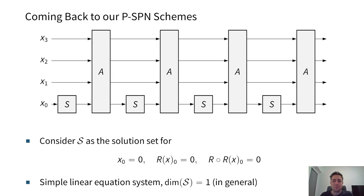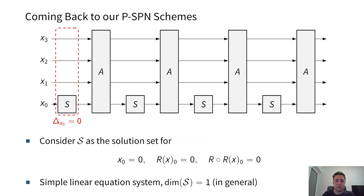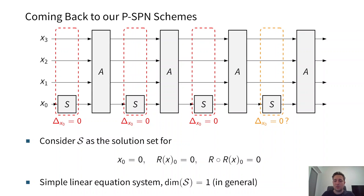Coming back to our PSPN schemes, if we consider S as the solution set of certain equations where we want some zero differences — a zero difference here, a zero difference here, and a zero difference at the S-box positions so that the S-boxes are not active — then in general the dimension of this solution set is 1. The difference in x_0 would be zero, and the results show how to construct the linear layer such that we have a non-zero difference, ensuring security.